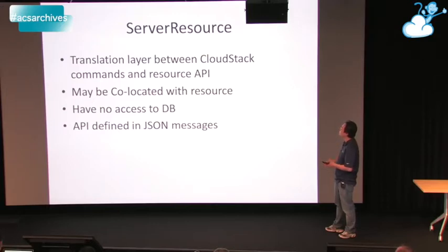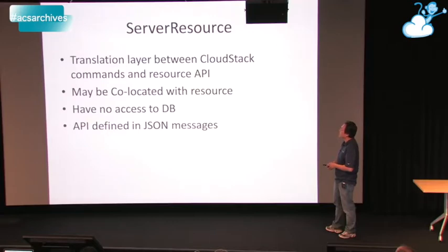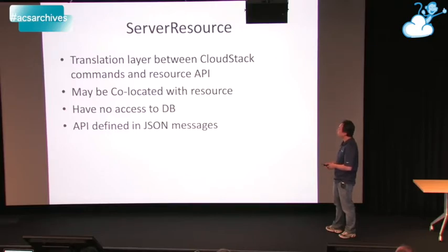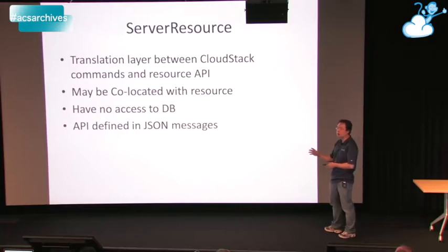For our server resource, it's a translation layer between CloudStack and the resource API itself. It communicates only in JSON — everything is passed through like that, there is not an actual Java API call. It may be co-located with the resource, and because it may be co-located with the resource, it has no access to the database. So the commands that are sent to it need to contain everything that the resource needs to execute that particular command.